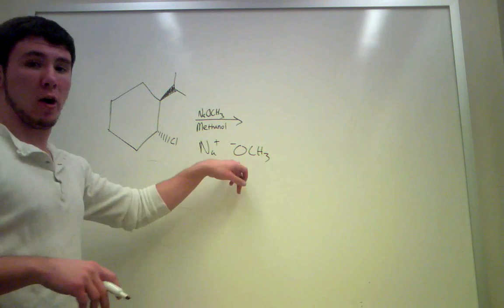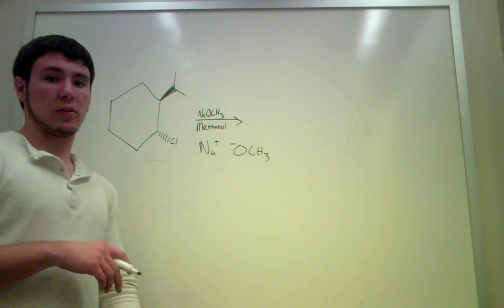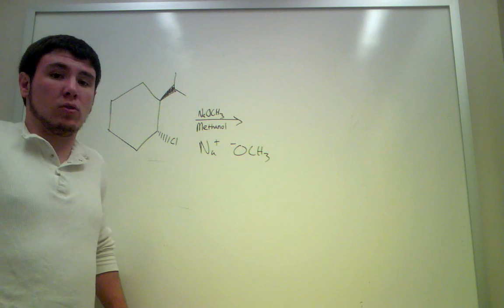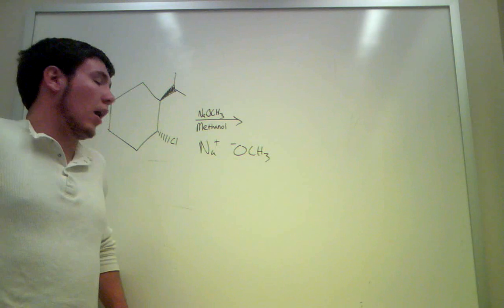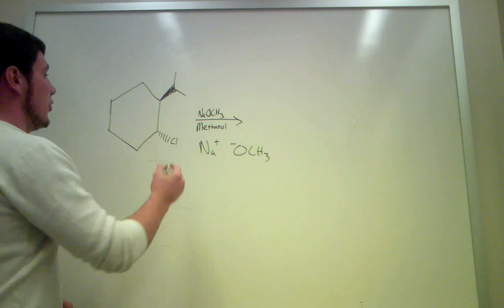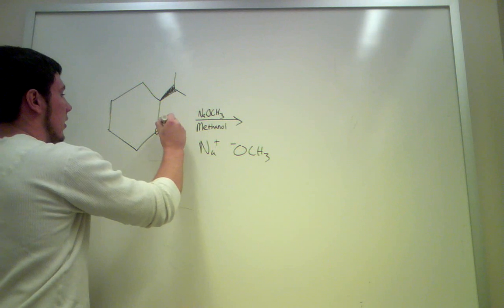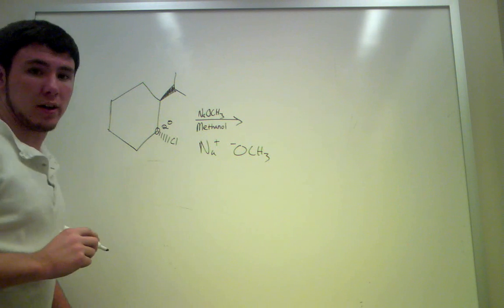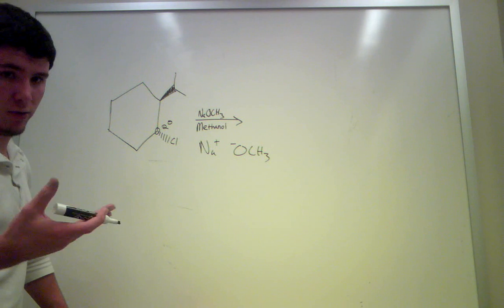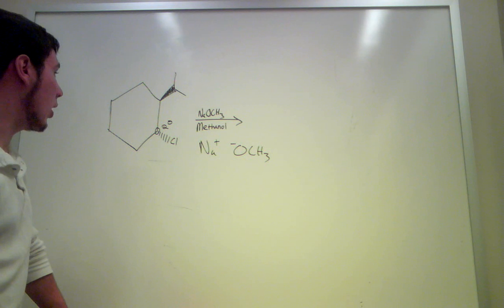This is going to be a very strong base. And since this is a strong base, we're going to have an E2 or an SN2 reaction. Now let's look at the molecule and see what we got. We know that this is bonded to a secondary carbon here. So that means that we can have either SN2 or E2. Both of them still apply.